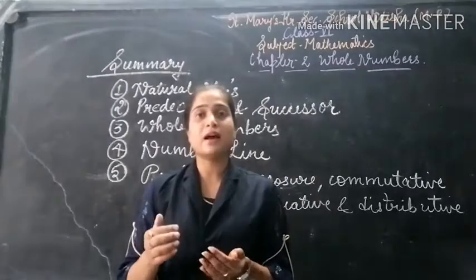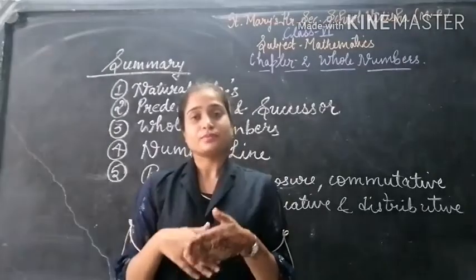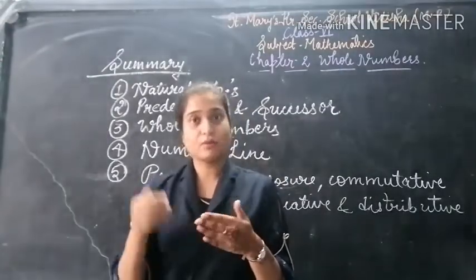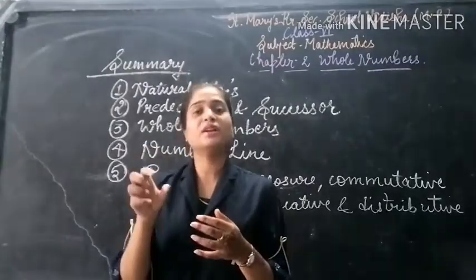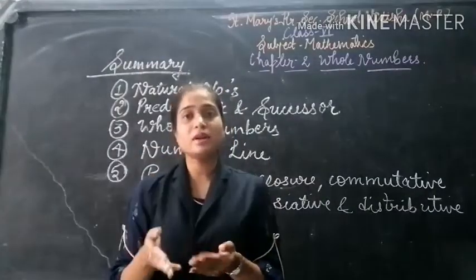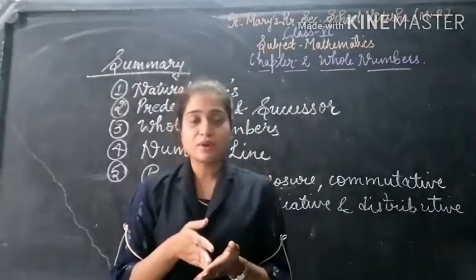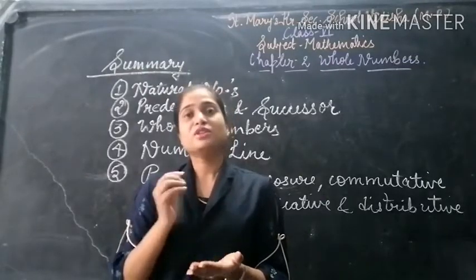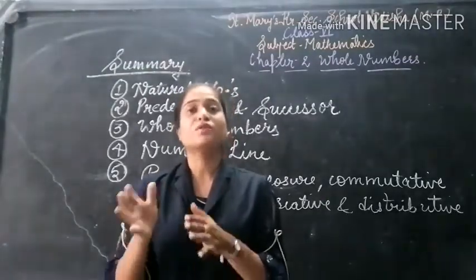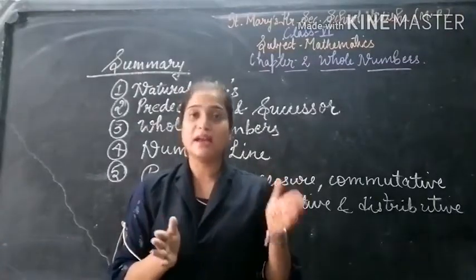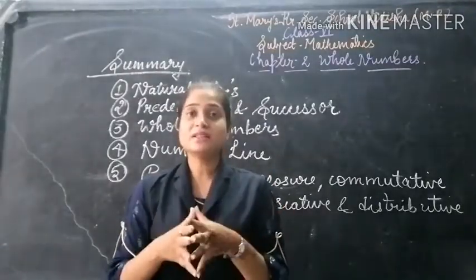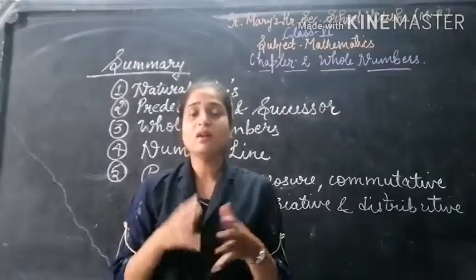What are predecessors? Predecessors are when we subtract 1 from the given number or from the natural number. Suppose the number is 4; when we subtract 1 from 4, it gives us 3. So 3 is the predecessor of 4. When we subtract 1 from any natural number or given number, we get the predecessor of that number.